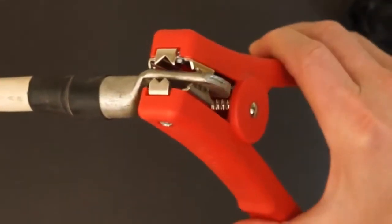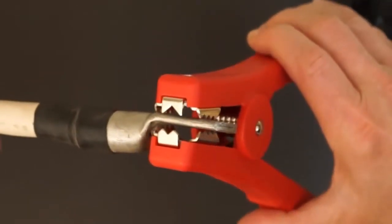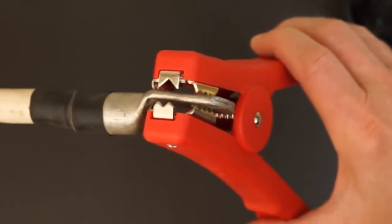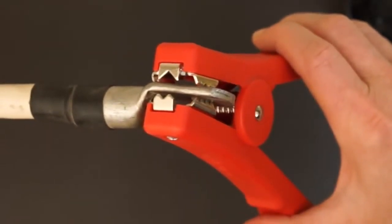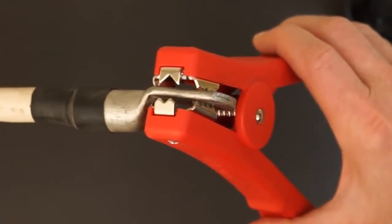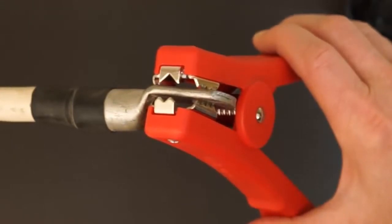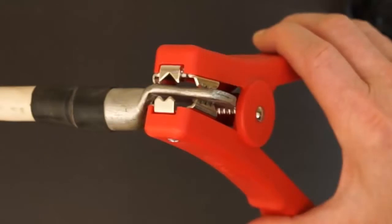When using HIPPO or alligator probes, ensure that both jaws are in contact with the resistor under test. One jaw functions as a source lead, and the other as a sense lead. Therefore, both must be in firm contact with the resistor's surface to provide an accurate measurement.